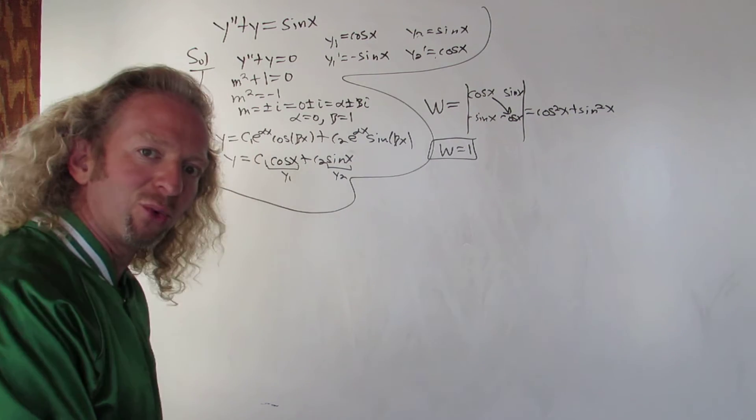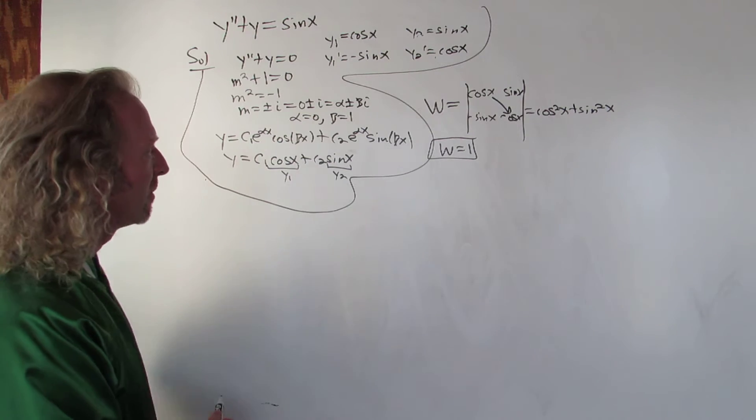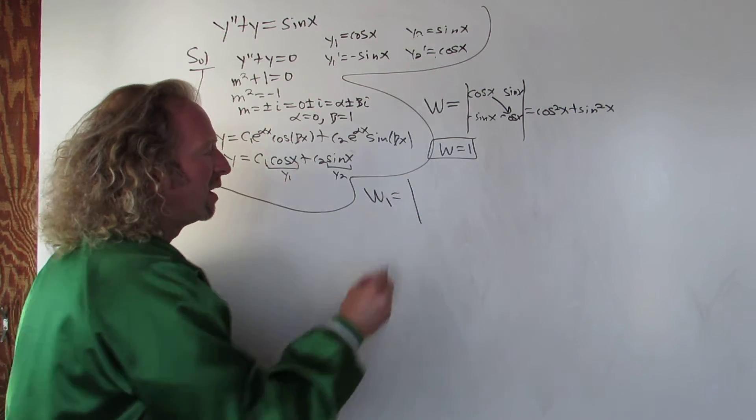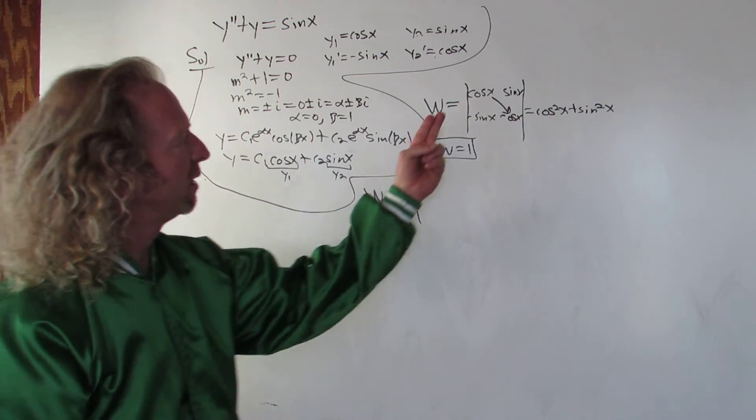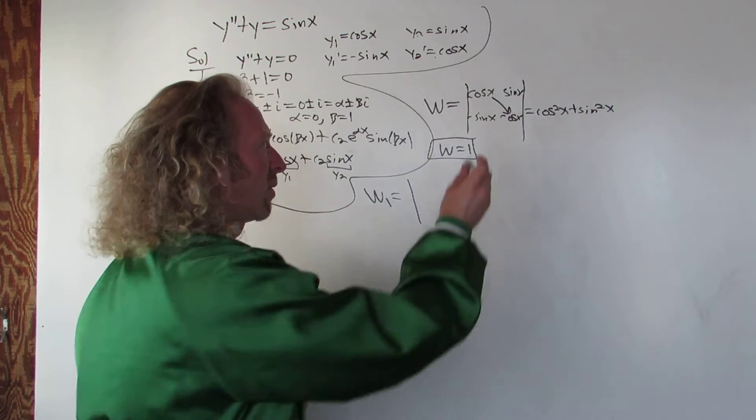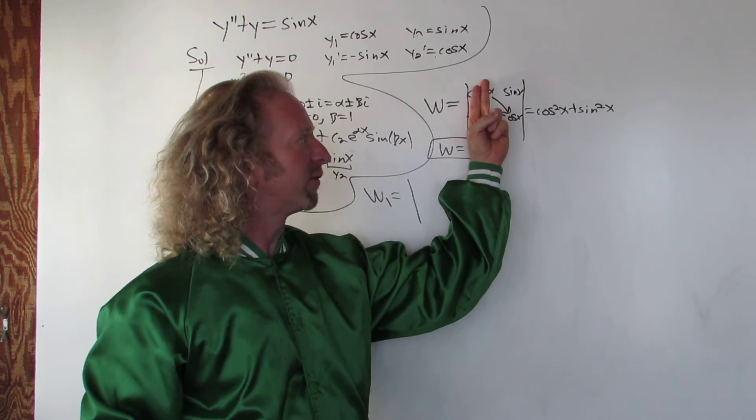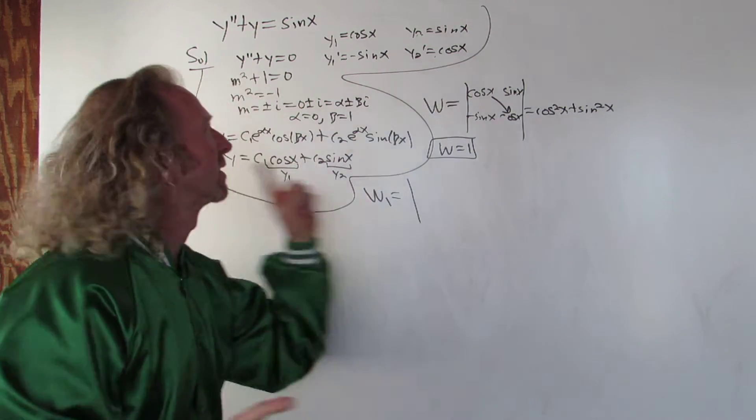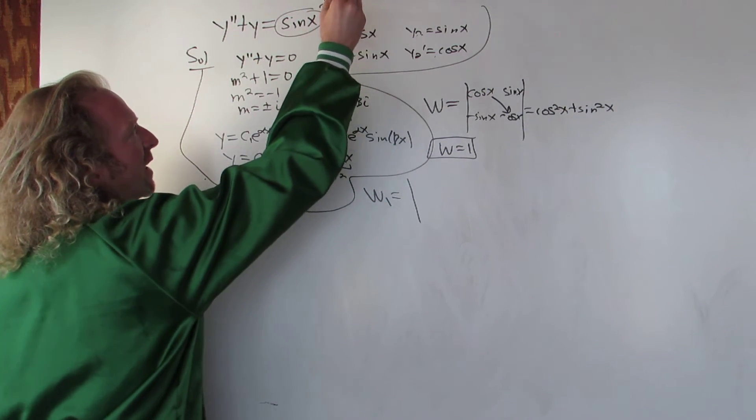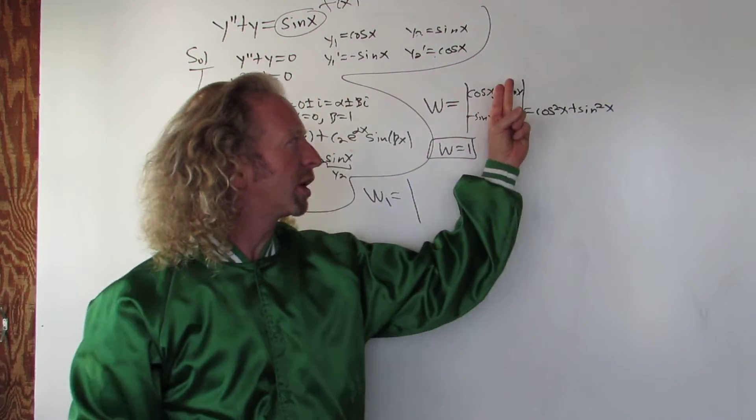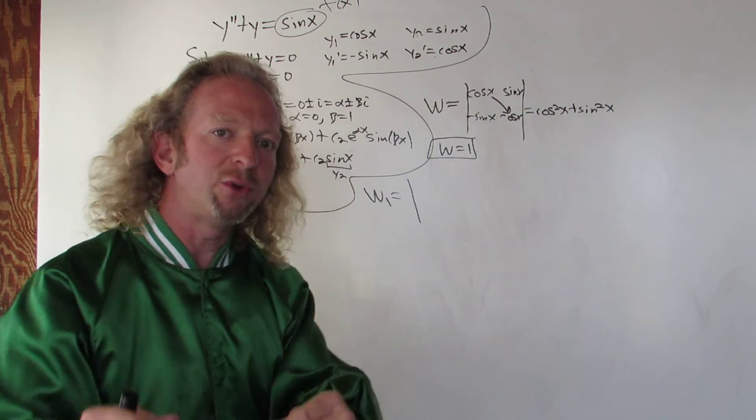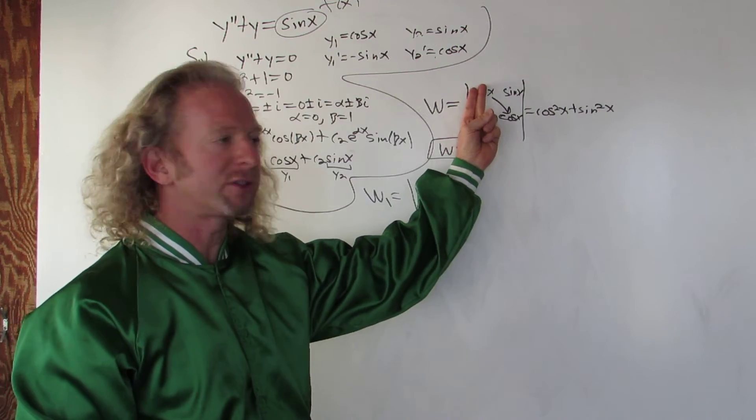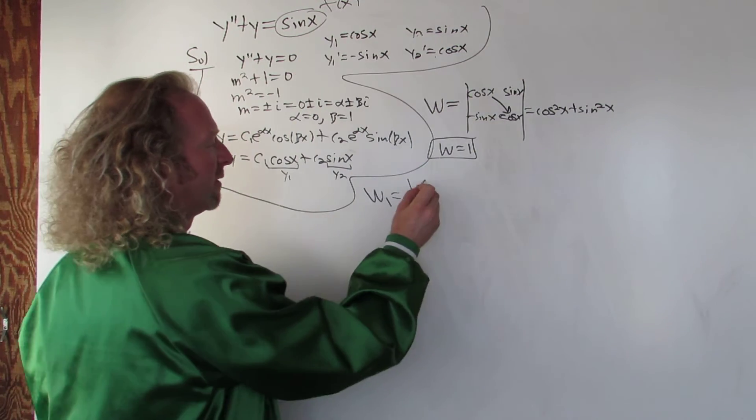I'm going to put this in a box because it's an accomplishment. We needed to find that. The next step is to find w1 and w2. So the formula for w1, whenever you're looking for w1, it's kind of reminiscent of Kramer's rule. You cover up the first column and you replace it with 0 and f of x. So this is your f of x.